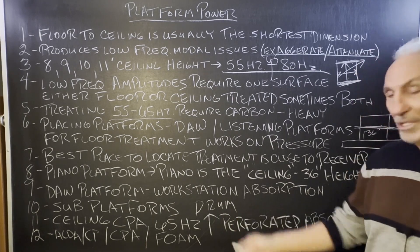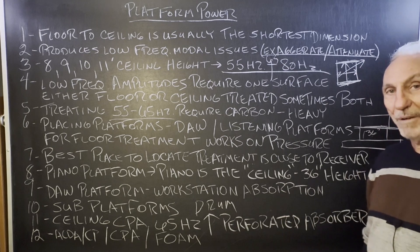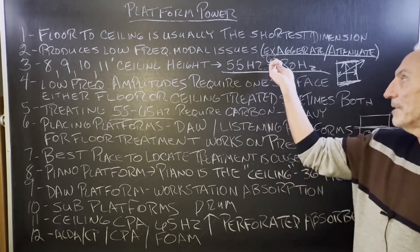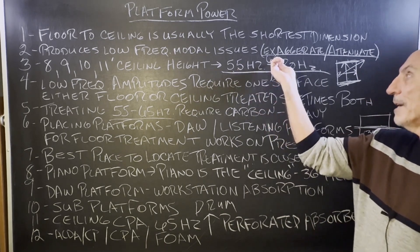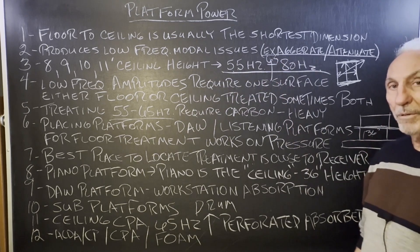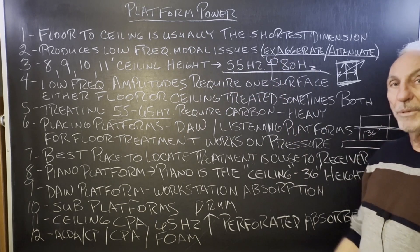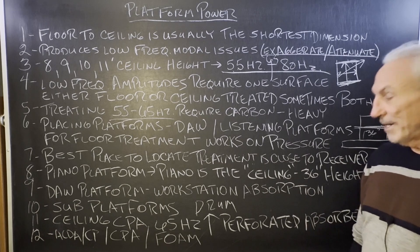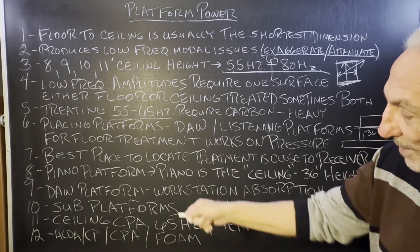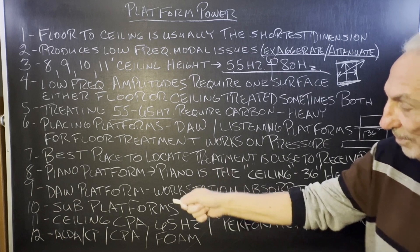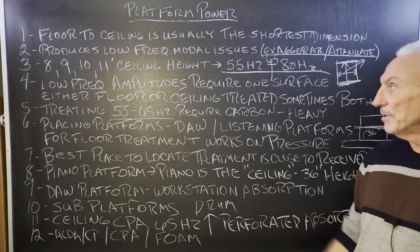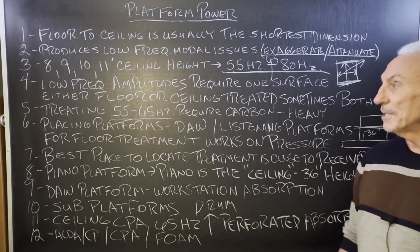The ceiling CPA starts at 65 Hertz — that's our perforated absorber. So carbon covers 55 to 65 Hz, then 65 to a couple hundred Hz for the perforated absorber, and then foam comes in at 125 Hz. So it's ACDA carbon panel, CPA, and foam. Those are our three tools that we use to deal with all of these frequency ranges.